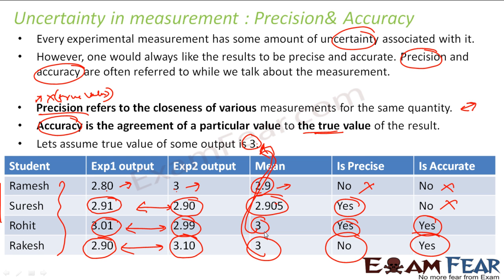I hope with this you understood the difference between precision and accuracy. For precision, I don't care about the true value — I only care about the closeness of the various outputs. If the outputs are very close, they are precise. But for accuracy, I don't care about the closeness; I care only about the final value. Did you get the final answer? If yes, you are accurate. If you are not getting the final answer, you are not accurate.